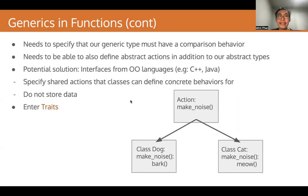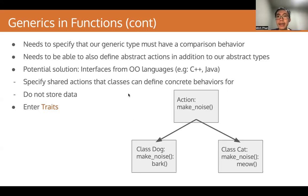Our problem here is that we need to specify that our generic type must have a comparison behavior. That means we need to be able to define some abstract actions — in this case, a comparison action — in addition to our abstract types that are the generics. A potential solution we can look at are interfaces from object-oriented languages such as C++ or Java.